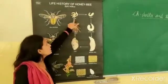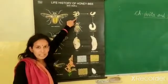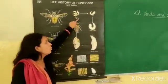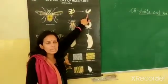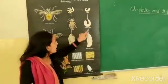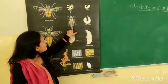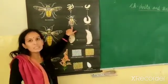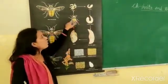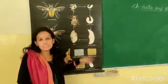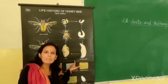But look here — eggs. Do these eggs look like honey bees? No. Those eggs turn to larva. Larva also doesn't look like honey bees. Larva turns to pupa, and then pupa turns into honey bees. All the stages are different from each other.